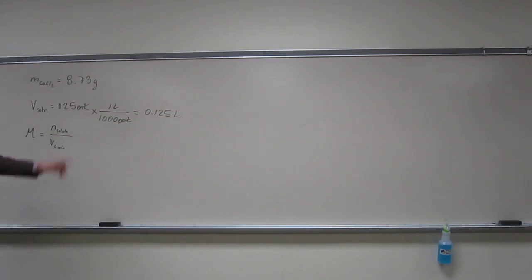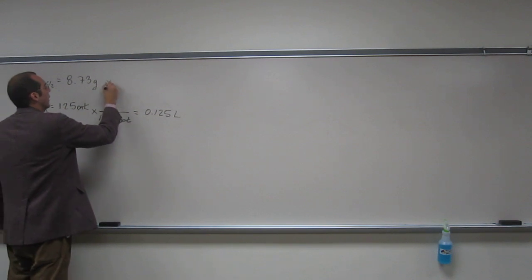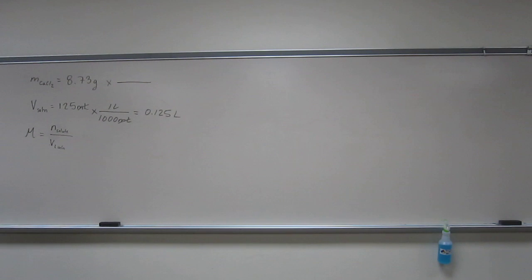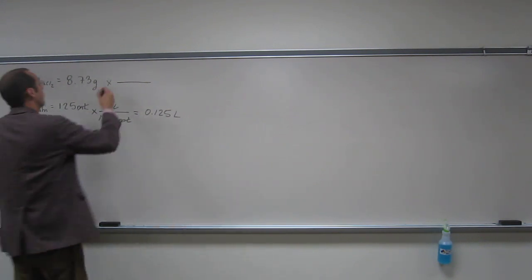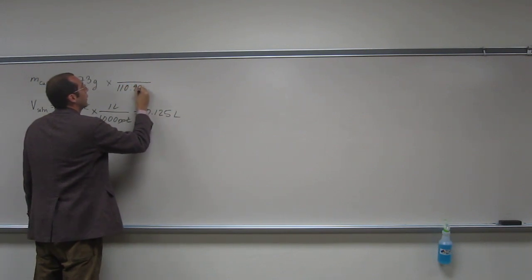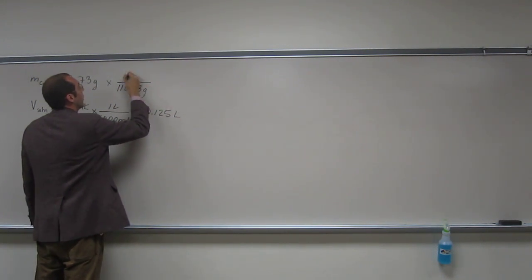How do we convert from grams to moles? The molar mass, right? Yeah. So what's the molar mass of calcium chloride? Has anybody calculated it yet? So it's going to be 40.01. 110.98. What was it, sorry? 110.98. 110.98 grams per one mole.